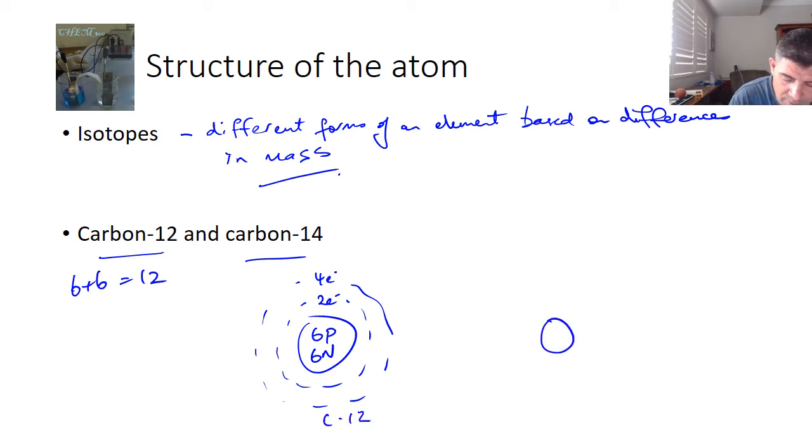If I asked you to draw carbon-14, you might not know what that is, but if I tell you that these are the mass numbers, and we know therefore if there are six protons, which there has to be if it's going to be carbon, then that means there must be eight neutrons in carbon-14. So six protons, but eight neutrons, and of course the electrons are the same.